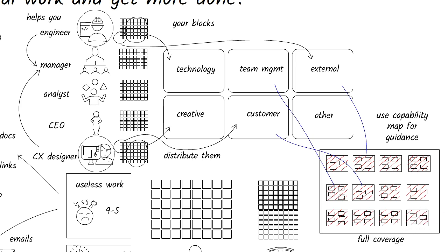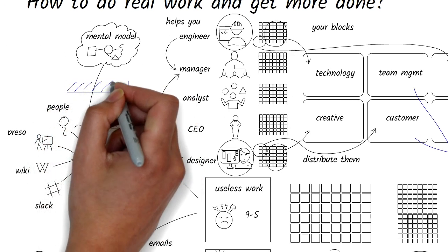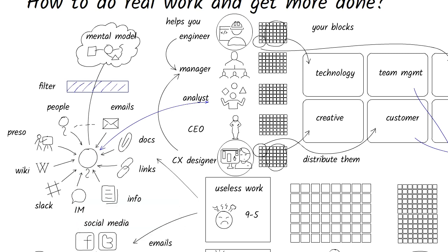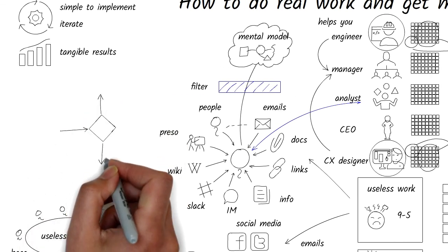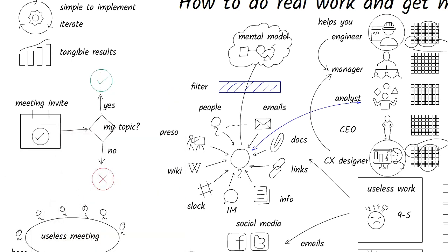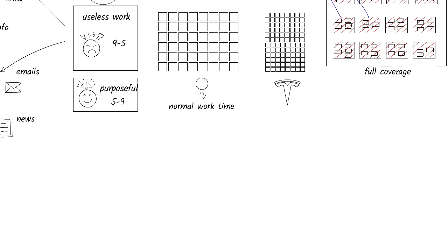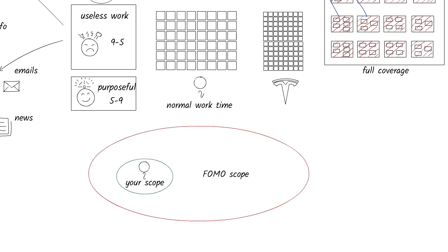Information will hit you through multiple channels. Since you know what topics you should care about, you can filter out the rest to build your mental models. For example, before accepting a meeting invite, ask yourself if that meeting is relevant to your priority topic. If no, skip. If yes, plan on giving it your full attention without multitasking.